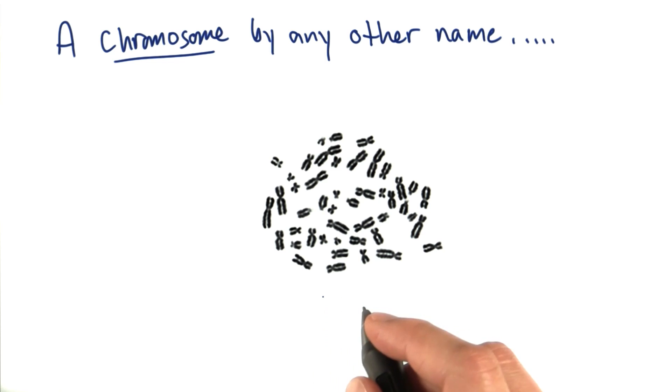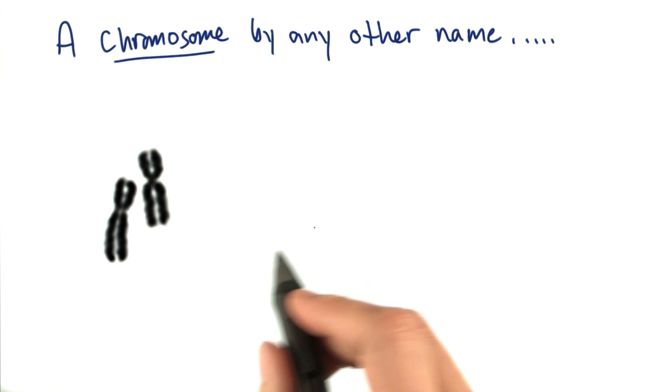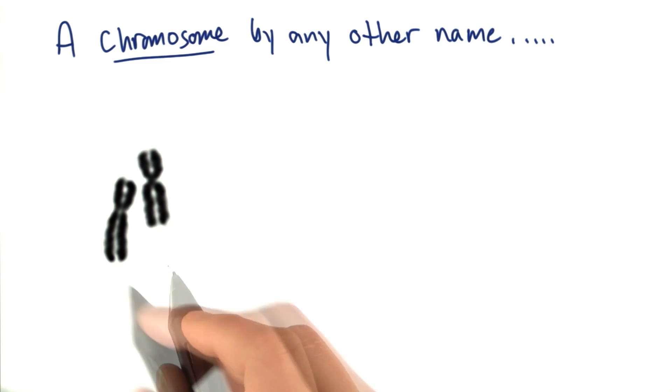This picture that you saw earlier is in fact a real picture of human chromosomes from a cell. Let's focus in on this pair of chromosomes here. They sort of look like big X's, don't they?